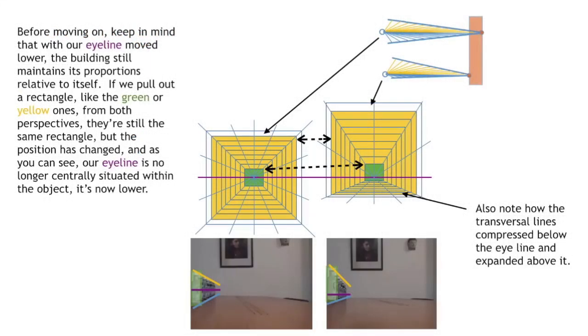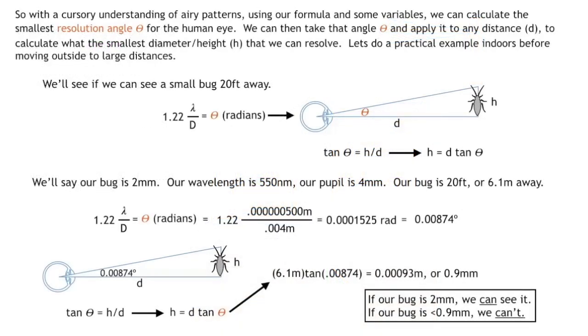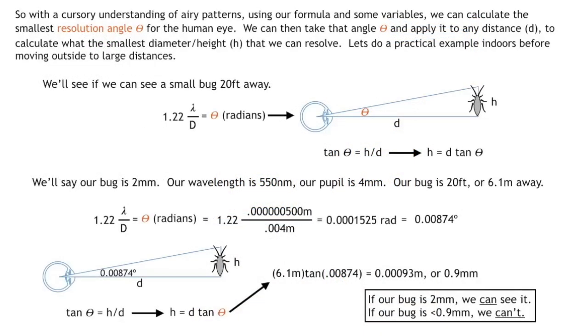It's beyond your angular resolution limit. It's the smallest angle at which your eye can still tell two points of light apart. Anything smaller than that blurs together and becomes invisible to you.